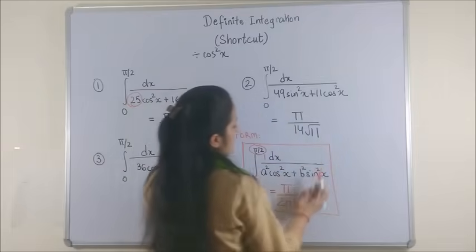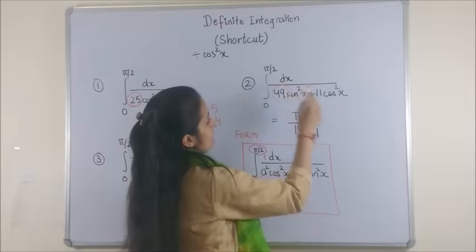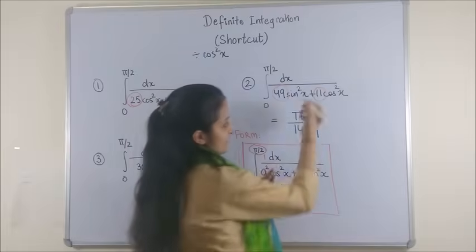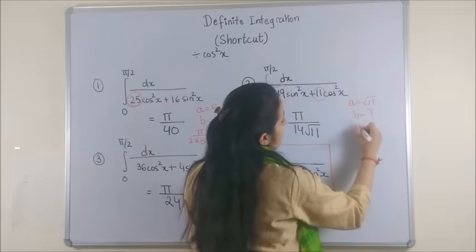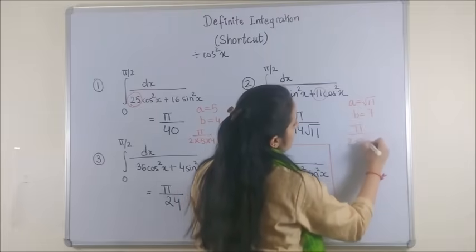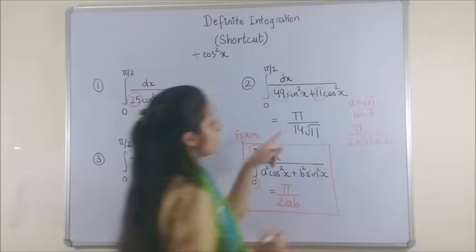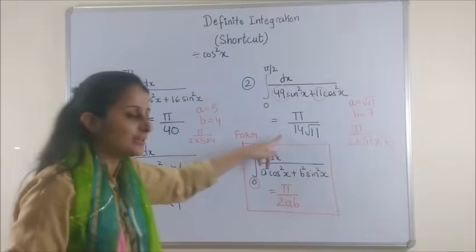Whether you keep it here or here, it doesn't make a difference. Anyway, your a is root 11, your b is 7. So pi upon 2 into a into b is pi upon 14 root 11.